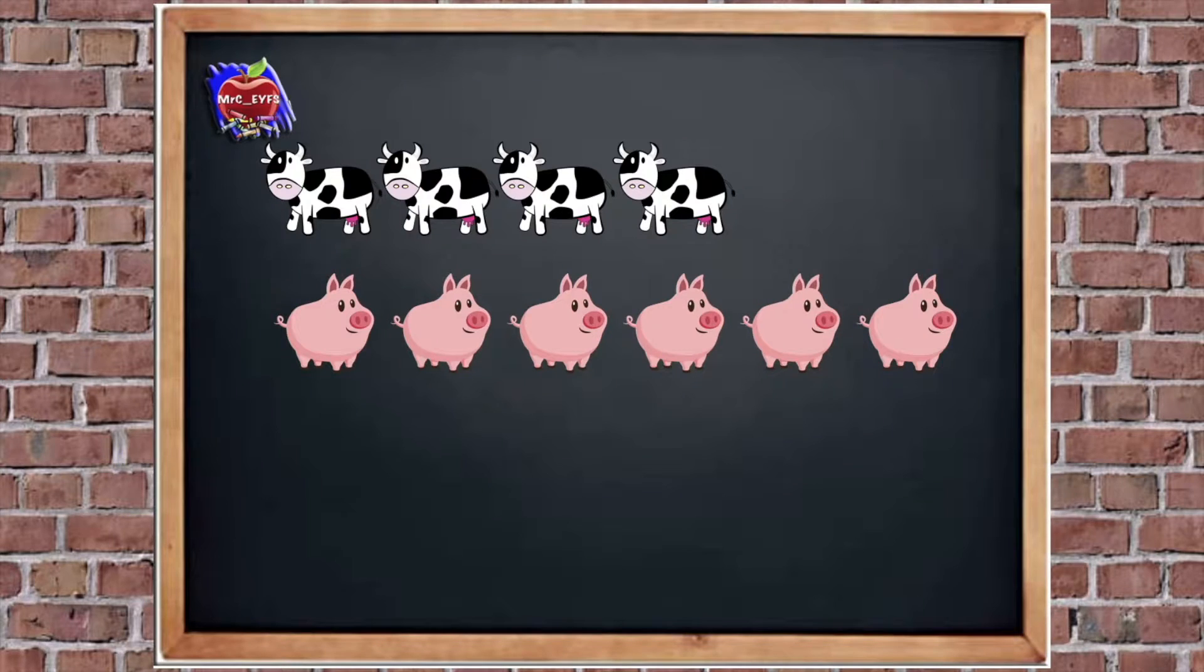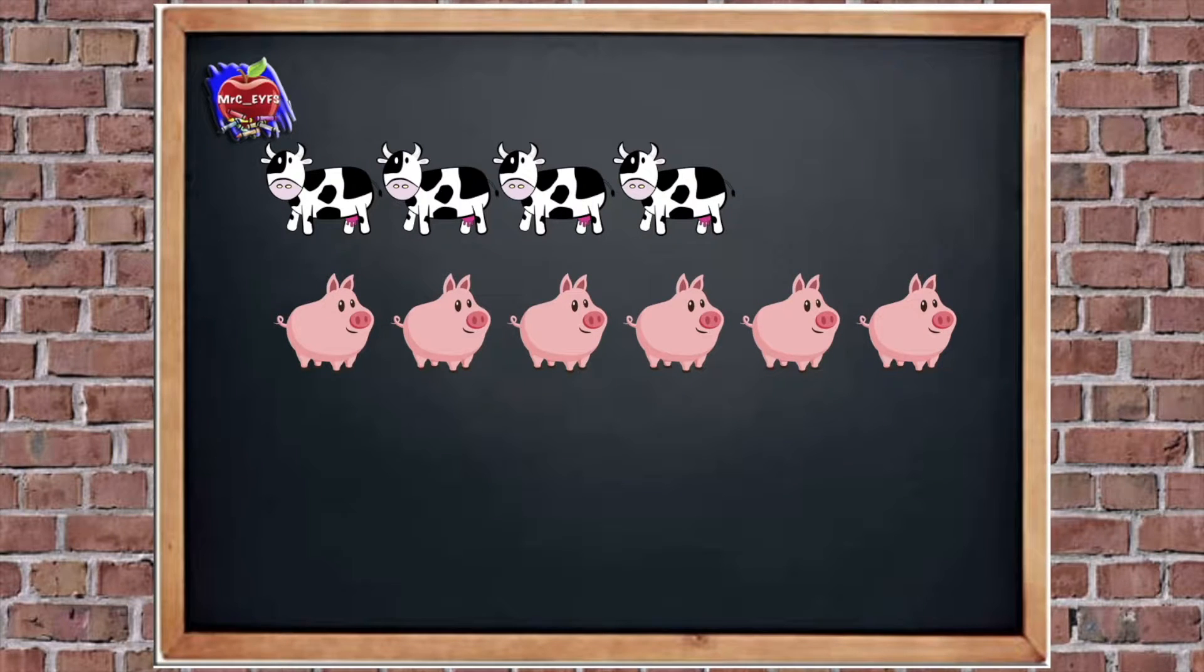I'll tell you what, I'm going to help us. What I've got here, I've got the cows and I've got the pigs and I've lined them up to match one to one. But I've made the cows a bit smaller so they're the same size now. So what I'm going to do, I'm going to use some cubes to represent the animals. So for the cows, I'm going to use red cubes. So if you've got some cubes, can you get them ready now?